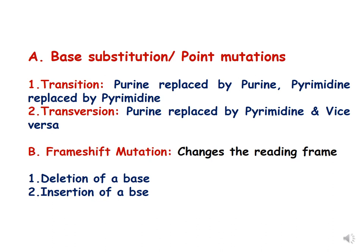DNA has four kinds of bases: A, G, C, and T. Purines are adenine and guanine; pyrimidines are cytosine and thymine. In base substitution mutation, a base is replaced by another base. In a transition mutation, a purine is replaced by a purine and a pyrimidine is replaced by a pyrimidine — for example, A is replaced by G or G by A, and C is replaced by T or T by C. In transversion, a purine is replaced by a pyrimidine and vice versa — for example, A is replaced by a pyrimidine.